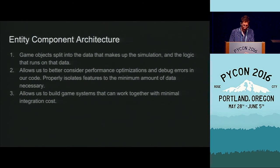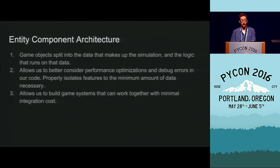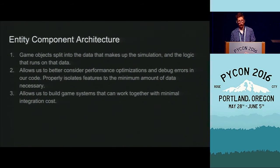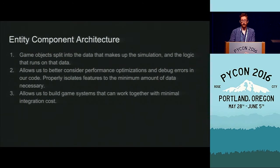Entity component architecture also allows us to better consider performance optimizations because each individual feature is isolated so we can turn it off, turn it on, test how much time it's taking, and reorganize how it manages data so it works best. Finally, it allows us to build game systems that work together with minimal integration costs — I can write a physics system that will work for anybody's game without knowing what that game is. As long as you add it in, it's going to do what it does regardless of what else is in the game. Only the very specific dependencies of an individual component matter.